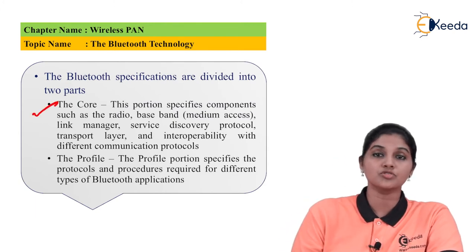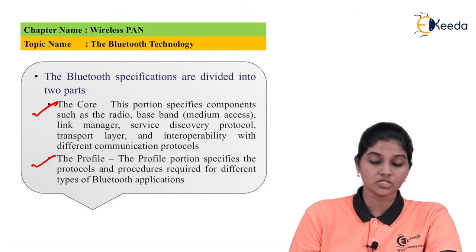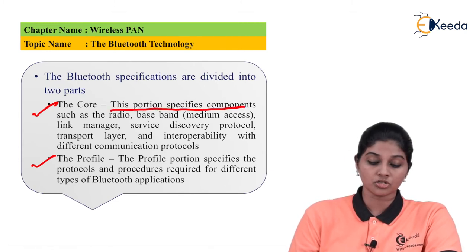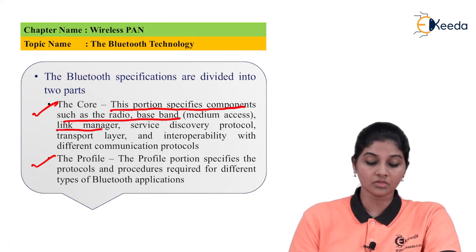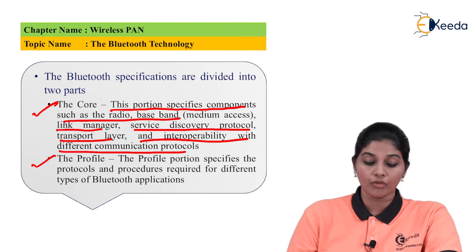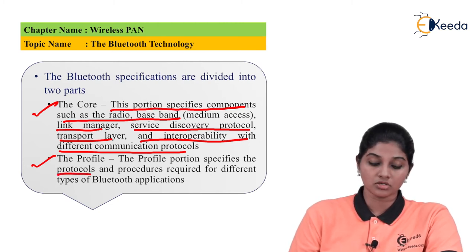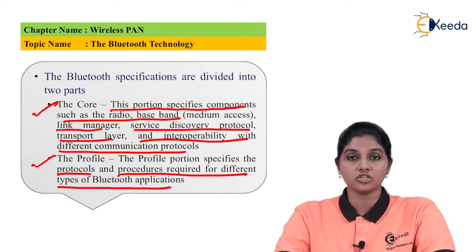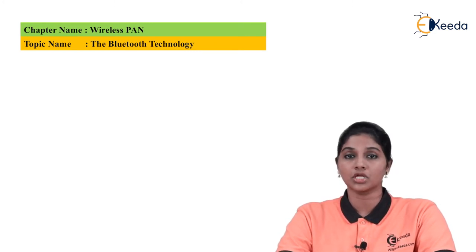The Bluetooth specification is classified into two types: core specification and profile specification. The core specification specifies components like the radio, baseband, link manager, service discovery protocol, transport layer, and interoperability with different communication protocols. The profile specification covers the protocols and procedures required for different types of Bluetooth applications — different applications are developed based on the profile specification.